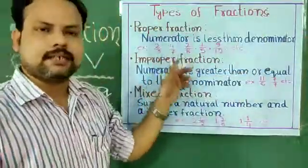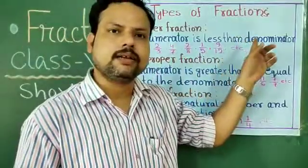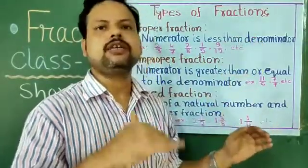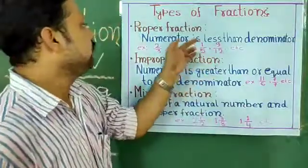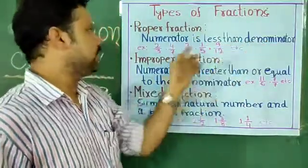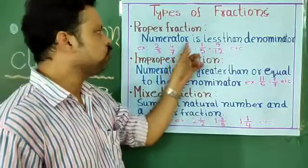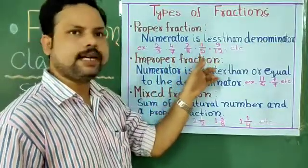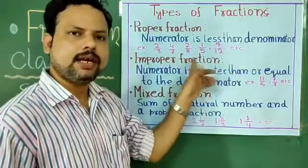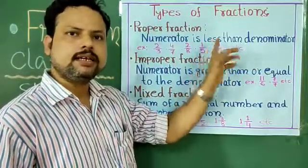Proper fraction — here, the numerator is less than the denominator. The upper one is numerator, the lower one is denominator. Examples: 2 by 3, 4 by 7, 2 by 8, 1 by 5, 9 by 12, etc. Everywhere our denominator is more than the numerator.